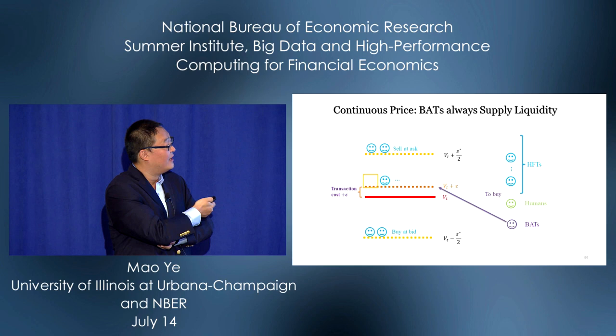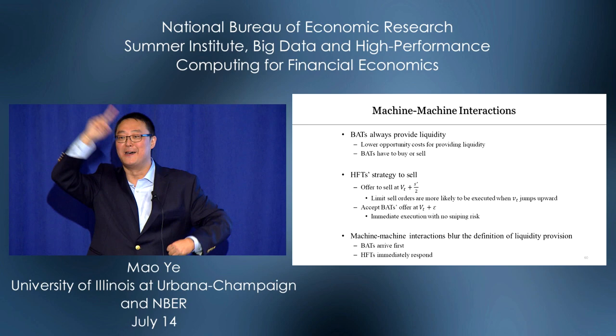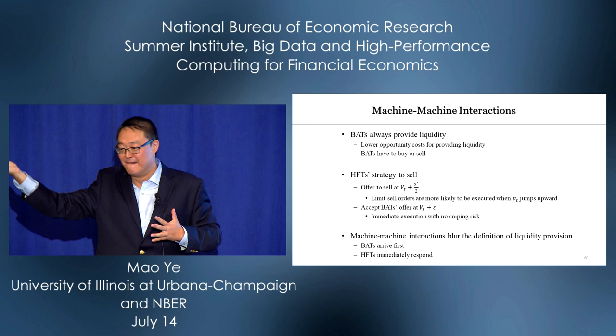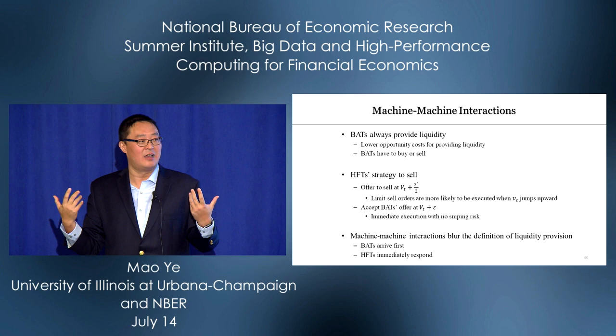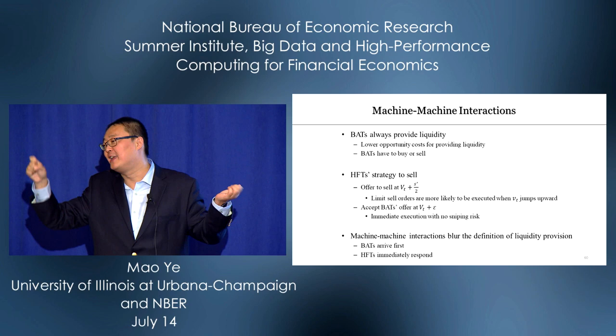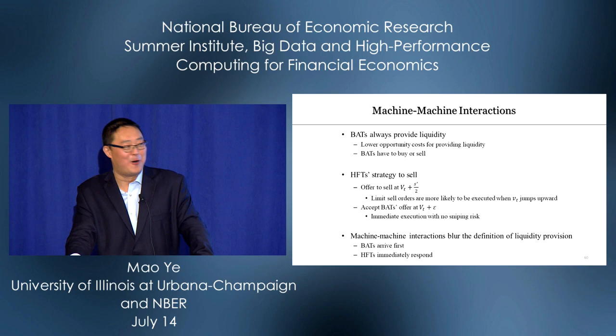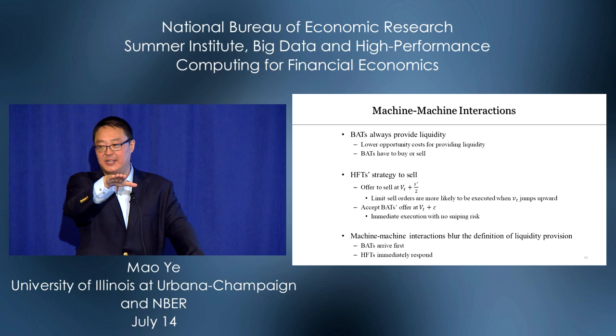The takeaway: this is a model of machine interacting with machine — a faster agent interacting with another fast agent. BATS on the margin always provide liquidity because of opportunity cost: BATS have lower opportunity cost of providing liquidity because they have to buy or sell anyway. Whenever there's price competition, they can do that. They have a different outside option.